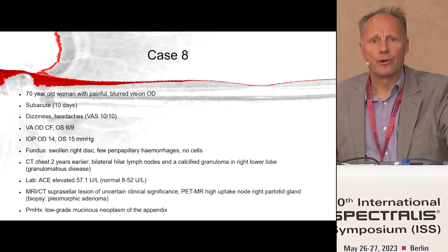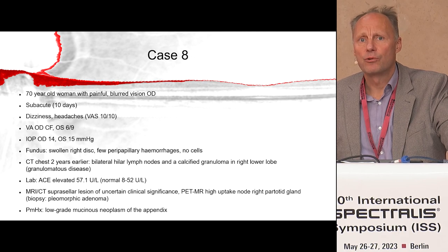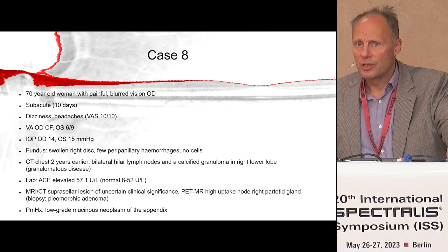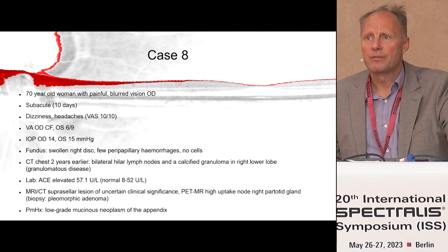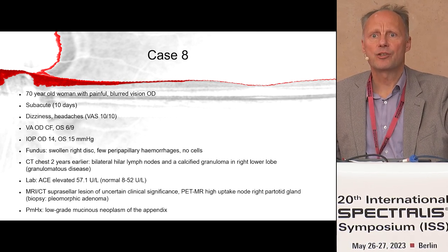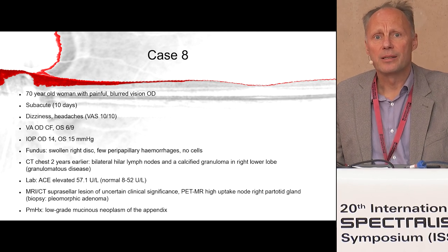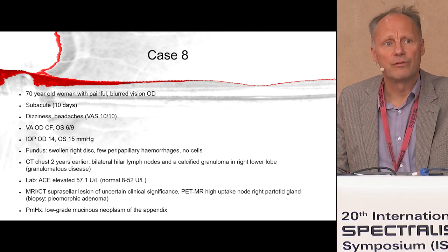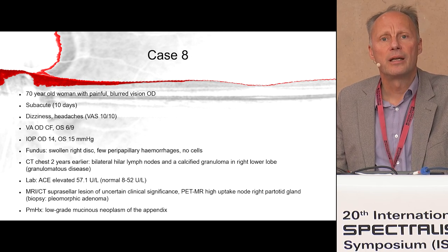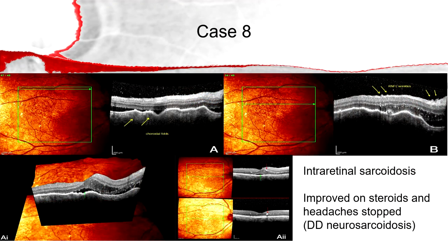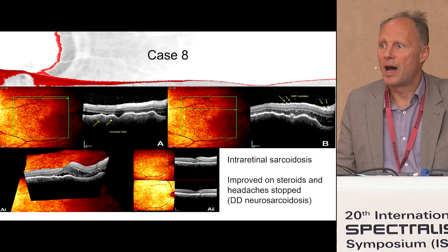A complex case: someone with a background history of cancer develops very painful vision loss with signs of meningeal irritation. Brain scan is normal; a PET scan finds an inflamed gland - an adenoma. Finally it's the OCT that gives the hint: we can see subretinal fluid and hyperreflective spots. This was sarcoid. Treatment with steroids led to pain stopping within hours and she made a recovery.